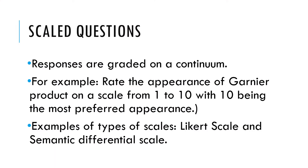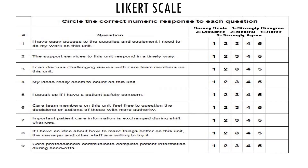Scale questions have responses graded on a continuum. For example: 'Rate the appearance of Garnier product on a scale from 1 to 10, with 10 being the most preferred appearance.' Examples of types of scales are Likert and Semantic Differential Scale. For the Likert scale: 1 means strongly disagree, 2 disagree, 3 neutral, 4 agree, and 5 strongly agree. For example, the statement 'The support services to this unit respond in a timely way' — if the respondent chooses number 5, that means they strongly agree.